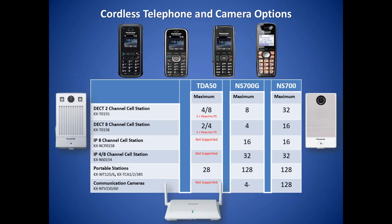The NS700 and the NS700G support the new IP cell station, the KX-NS0154. This is a PoE IP cell station that does not use digital station ports. It comes as a four-channel and can be expanded to eight channels with a license activation key. The NS700 and the NS700G support the legacy cell stations with higher maximums than the TDA50, and also support a higher number of portable stations.